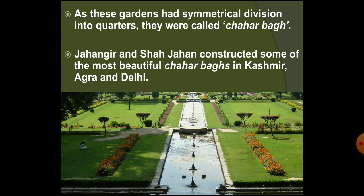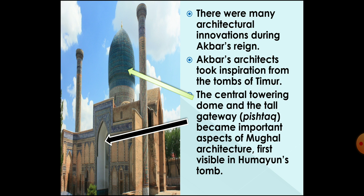Construction of such Charbaghscontinued during Jahangir's and Shah Jahan's reigns also. Charbaghsin Kashmir, Agra, and Delhi are some of the most beautiful examples of such gardens. For example, the image shown here is from Kashmir. During the reign of Akbar, many important architectural innovations were initiated.